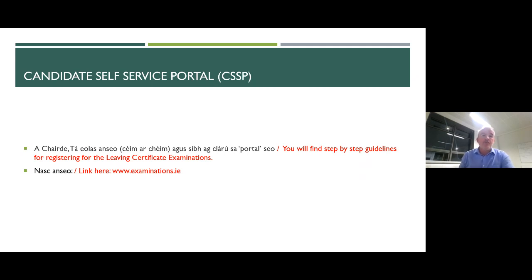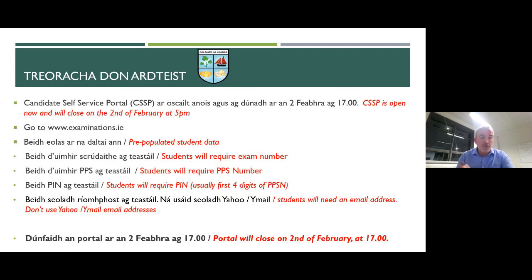The candidate self-service portal is open now on examinations.ie. This is where students must go to the website and register their name. It opened this morning and it closes on the 2nd of February. When students go into it, there will be pre-populated student data there. Students require a few things — their examination number, their year of exam. These have been given out in the last two weeks. They will need their PPS number, and they'll also need an email that they can be contacted at. Please don't use Yahoo Mail or Ymail. Make sure it's an email that they check regularly, because this is the way that the SEC, the State Examinations Commission, will contact you.